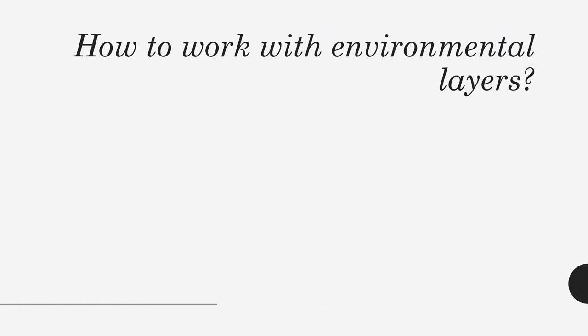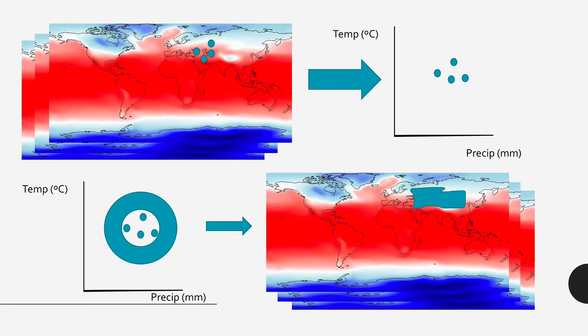Once you know about all these layers, you face the next step: now I know which layers I need and where to download them, so how do I work with these environmental layers? In the ideal world, you have different layers that are all the same and perfect, you have your species points, you extract the temperature and precipitation at your points, you use that to make a model, and then you project it back into the environmental layers to get your map.